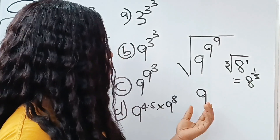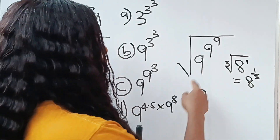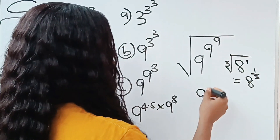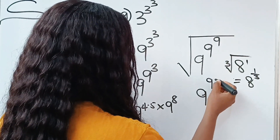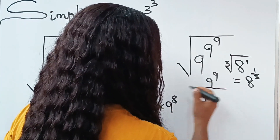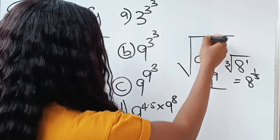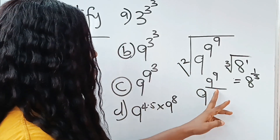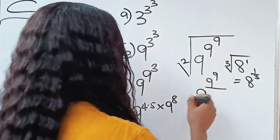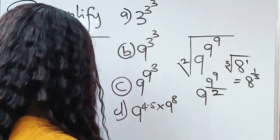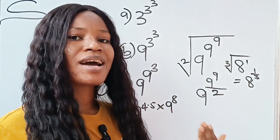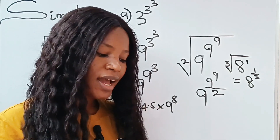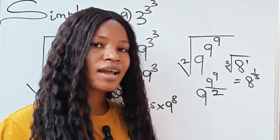Relating this to our problem: nine is the base, and nine to the power of nine becomes the numerator of our fraction. Since this is a square root, there is an invisible two, so this becomes nine raised to the power of nine to the power of nine, all divided by two. Now, nine to the power of nine simply means nine multiplied by itself nine times.